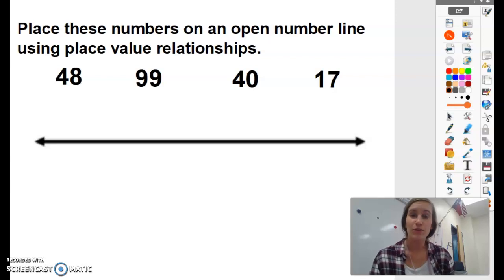So now that we know how to order three numbers from least to greatest, we're going to use what we know to order four numbers from least to greatest on an open number line.